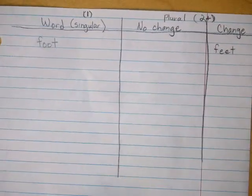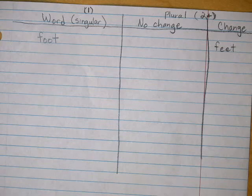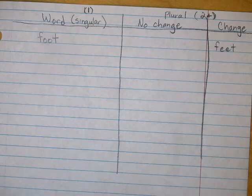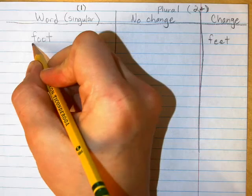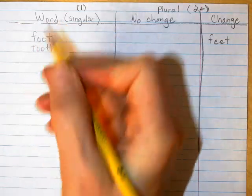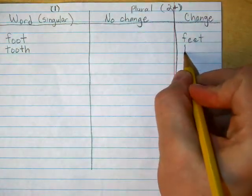All right, it goes over there in the change column. The next one I want you to try is tooth. What happens with tooth? Write down tooth, and then write down the plural of tooth, and whether it changes or not. So you would have written down tooth. Let's see how that looks — just like foot. And tooth does change, indeed. It changes to teeth.